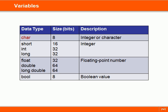By default, a char in C++ is one byte in size. A byte here is the minimum addressable unit of memory, which is guaranteed to be at least 8 bits, but might also be 16 or 32 bits depending on the system.